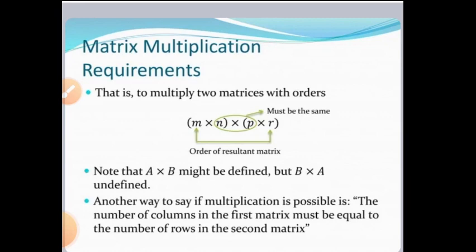So first we see when we multiply two matrices. For Matrix Multiplication, we have to check the order of the given two matrices. Let us take A has the order M×N and B has the order P×R. Here we have to check that the number of columns in the first matrix is equal to the number of rows in the second matrix. That is, N and P must be equal. Then only we can multiply these two matrices.